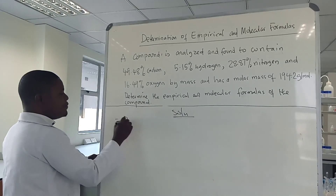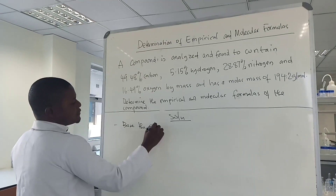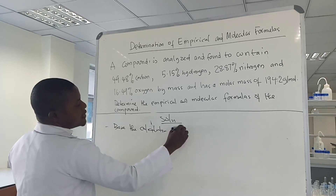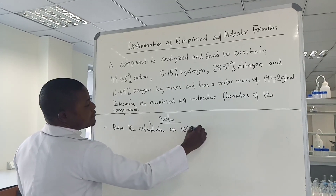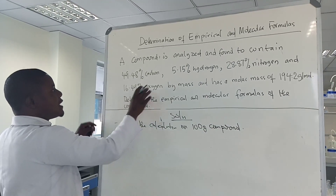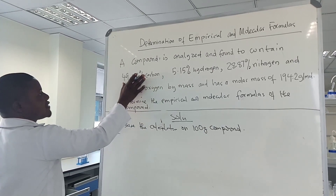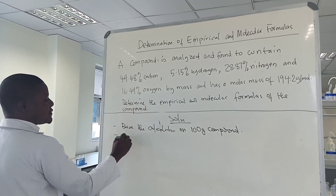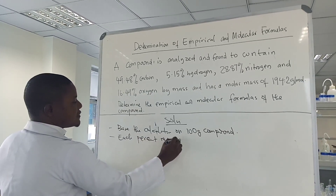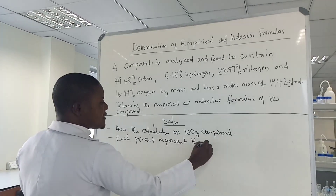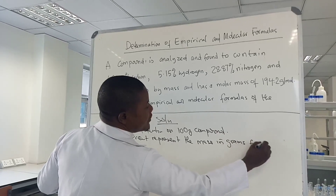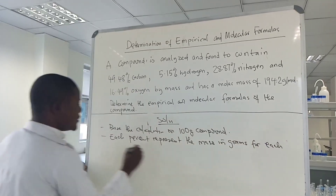Base the calculation on 100 grams of the compound. This simply means each percent represents the mass in grams for each element.